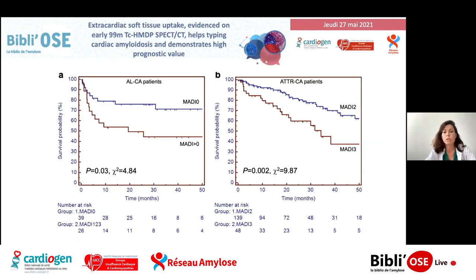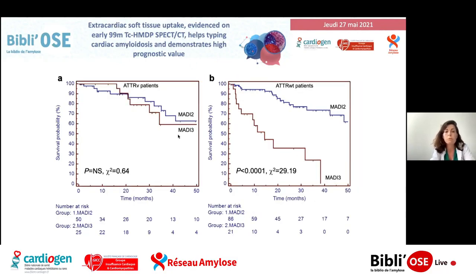Ce score a également un intérêt pronostique. Dans la population d'amylose AL, dès qu'on avait un score supérieur à 0, généralement 1, on a une différence significative sur la survie, supposant une atteinte systémique plus sévère. Dans l'amylose à transthyrétine également, si le score MADI est plus élevé, on a une différence significative sur la survie. Étonnamment, dans l'amylose à transthyrétine mutée, qu'on ait un score MADI 2 ou 3, on n'a pas de différence sur la survie. Dans l'amylose transthyrétine sauvage, on a bien cette différence, avec un pronostic plus péjoratif s'il y a une fixation extracardiaque en plus.